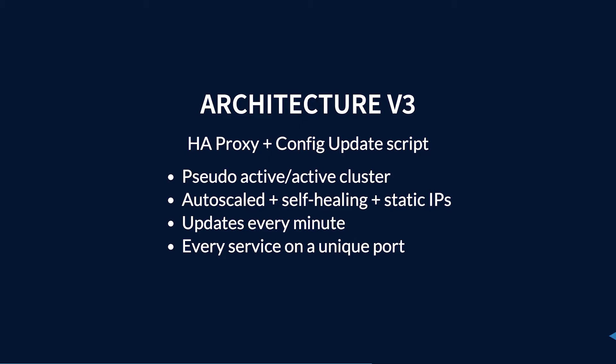So we iterated the architecture, and this time we moved to a proper load balancing solution, HAProxy, with a config update script. This was a pseudo-active-active cluster. I call it pseudo-active-active because Amazon doesn't actually support multicast. So you have to do all the heartbeating yourself. You can't use DRBD or any of the other solutions. It was auto-scaling, self-healing, with static IPs. So if nodes disappeared, they would come back with exactly the same IP address. So upstream dependencies wouldn't need to update the configuration.